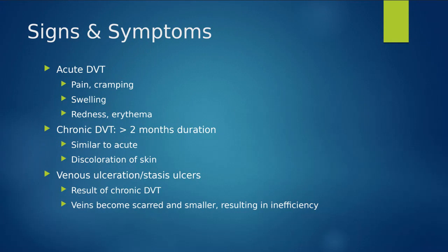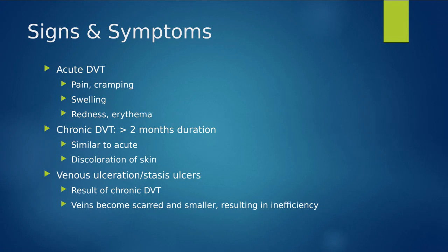Chronic DVT occurs when patients have ongoing clots, keep getting clots, or clots that aren't resolving — this has to happen for a period greater than two months. Symptoms are similar to acute, but we also start to see more serious and irreversible clinical symptoms. One of them is discoloration of the skin — the skin starts to change color because it's constantly responding to stagnant blood flow in the region where the clot is. Stasis of blood can result in venous ulcerations or other types of ulcers in the skin.